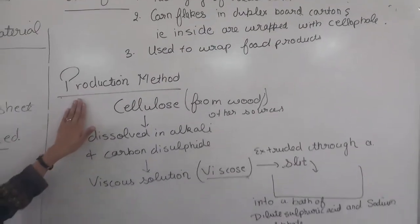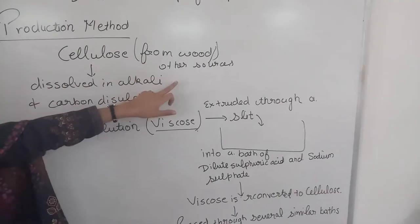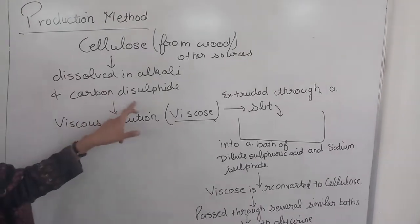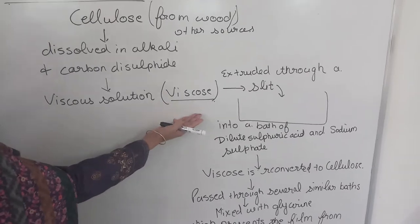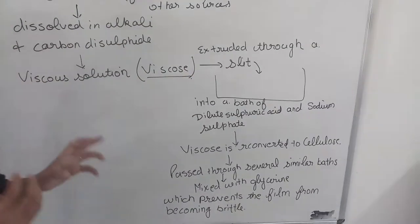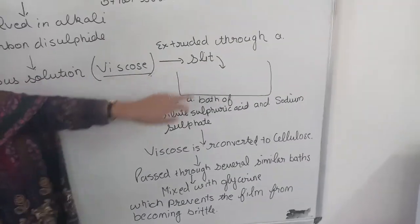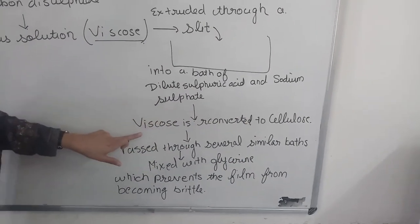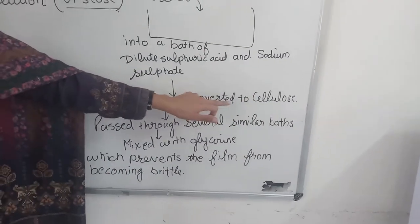Thereafter the production method. Cellulose which we get from the wood and other sources is dissolved in alkali and carbon disulfide. This produces a viscous solution which is also known as viscose. This solution is allowed to pass through a slit — slit means a narrow orifice. Then it enters into a bath of dilute sulfuric acid and sodium sulfate, in which the viscose is reconverted to cellulose. So this is known as regenerated cellulose.